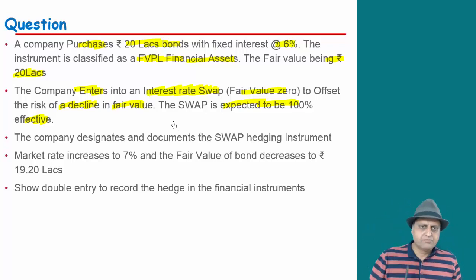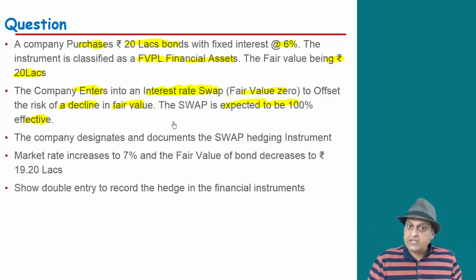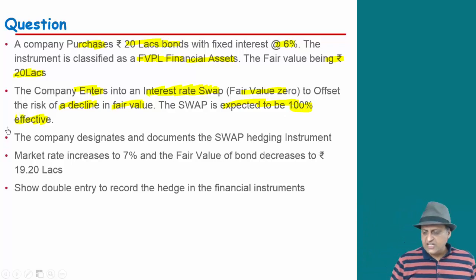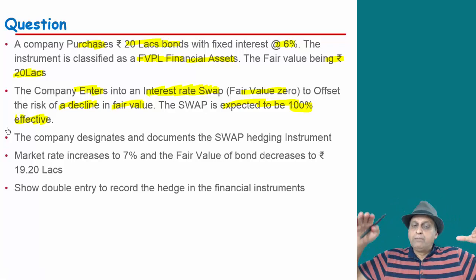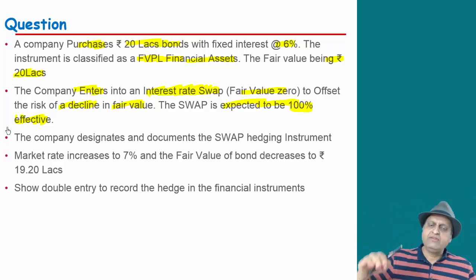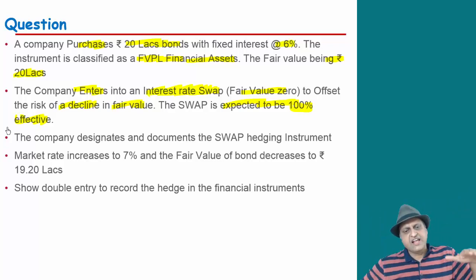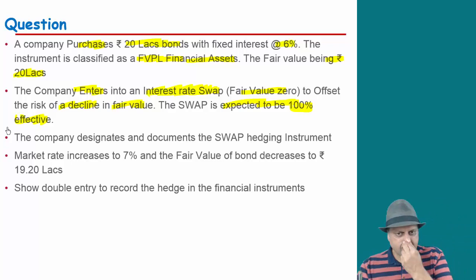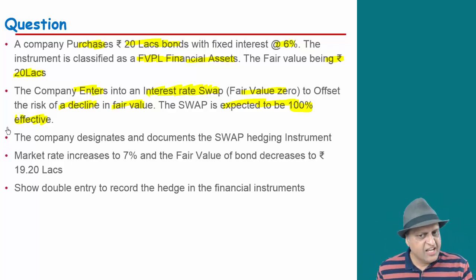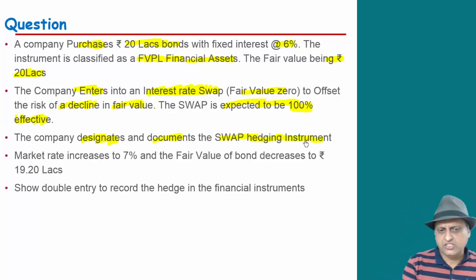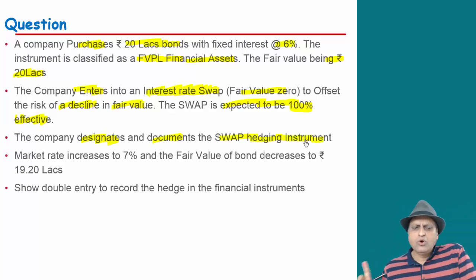If the rate of interest increases, the value of the swap will increase correspondingly, making the swap 100% effective. So the interest rate will vary but the value of the bond position is effectively hedged. The company designates and documents the swap as the hedging instrument.